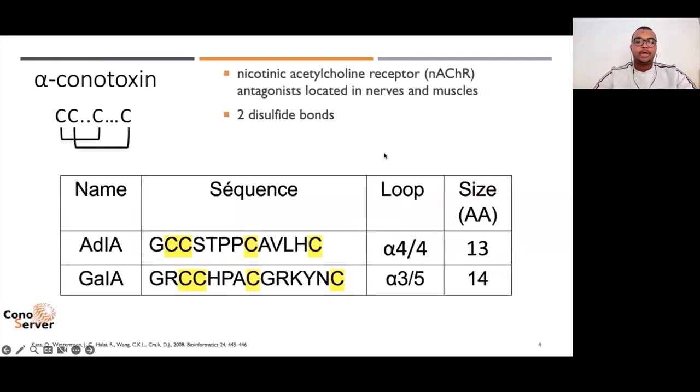Here we have the two conotoxins we identified from these two cone snails. AD1A was identified from Conus adamsoni and G1A was identified from Conus gorgon. These two display a cysteine framework related to alpha-conotoxins. Alpha-conotoxins are known to target nicotinic acetylcholine receptors, and they have two disulfide bond bridges.